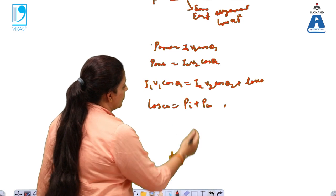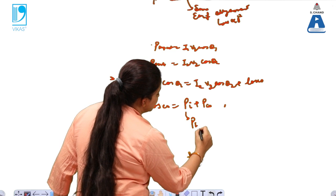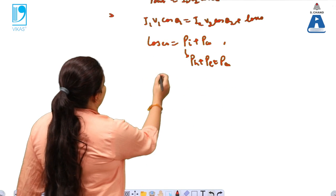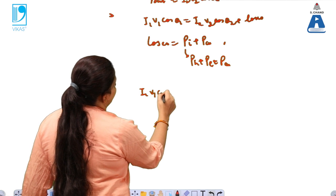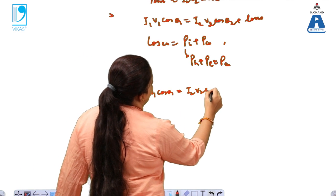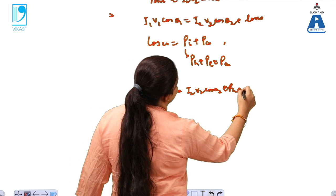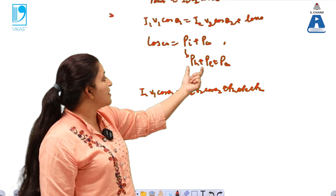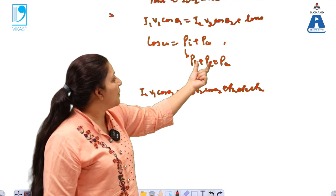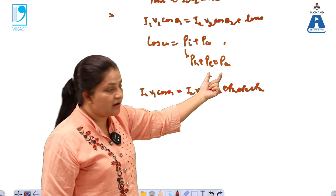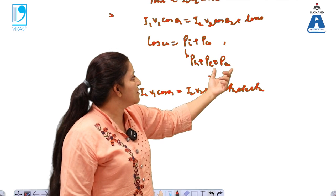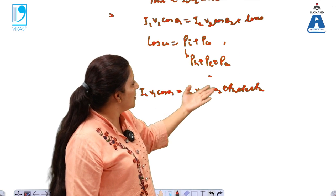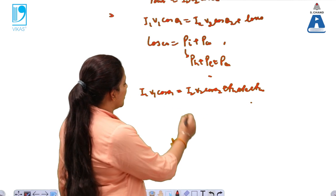These losses can be represented as Pi (iron losses) plus Pcu (copper losses). So in a practical transformer, the input power equals the output power plus the transformer losses, which include both iron losses and copper losses.